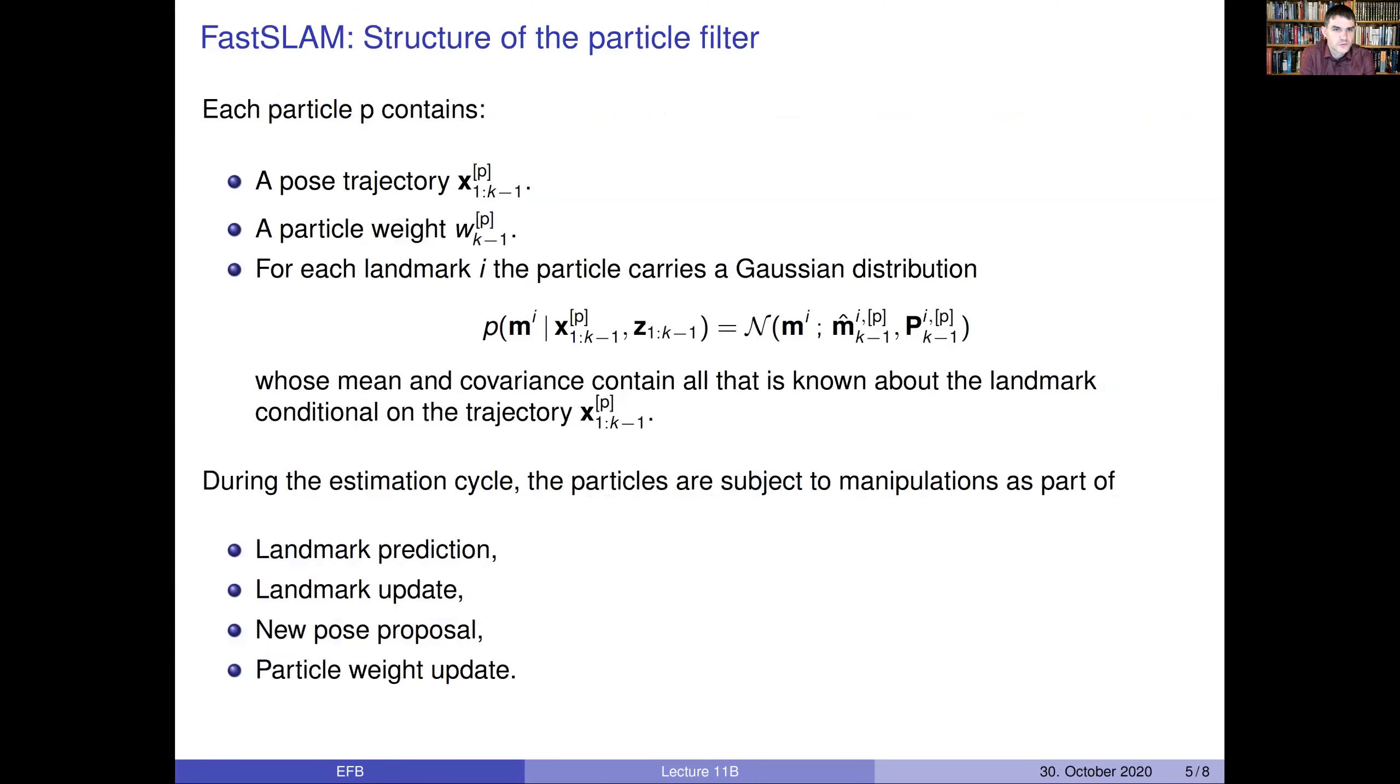So then we can start to talk about how we implement the particle filter for this. We are going to need particles for the pose trajectories. So every particle is a pose trajectory. Of course, we might only keep the last state of the pose trajectory, but that's what the particle really represents. So these particles have some weights. And each particle must then have a Gaussian representation represented by an expectation m-hat and a covariance matrix capital P for each of the landmarks.